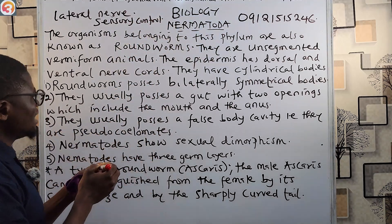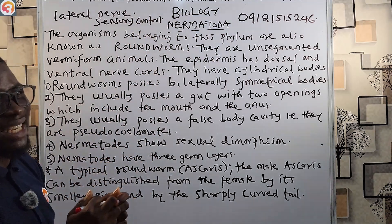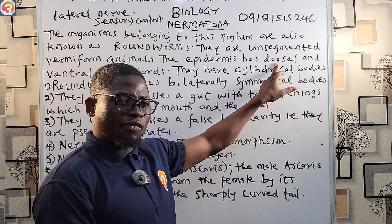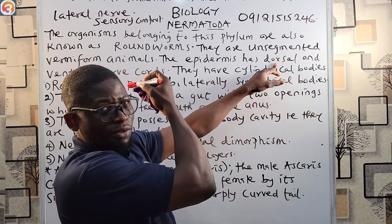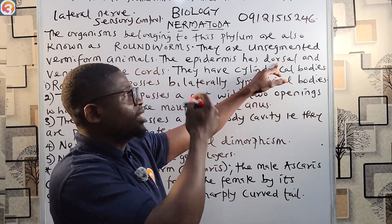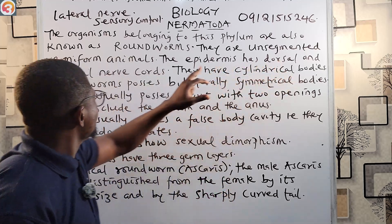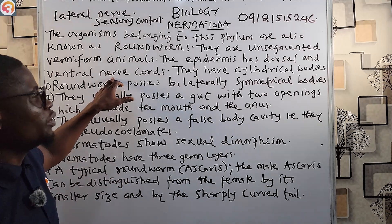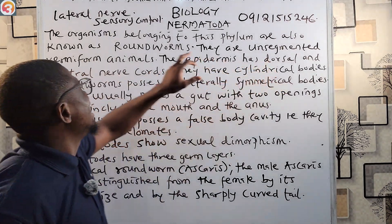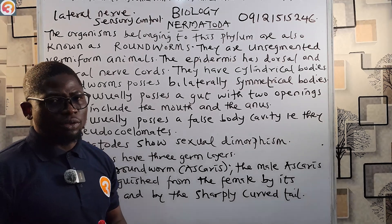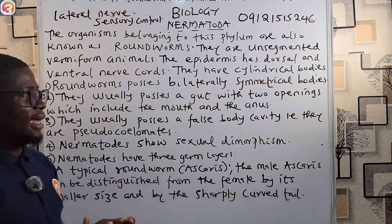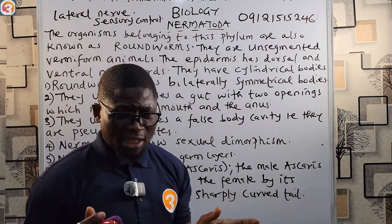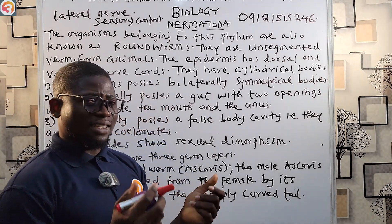The lateral nerve cord is used for sensory control. The dorsal nerve cord is used for motor control — for movement. The ventral nerve cord performs the combined function of both the dorsal and the lateral nerve cords. Most roundworms have cylindrical bodies.